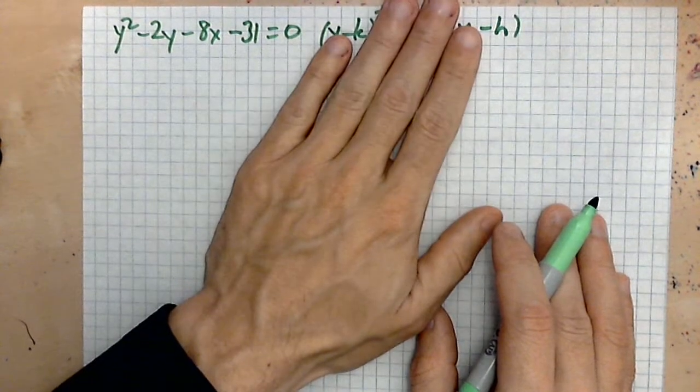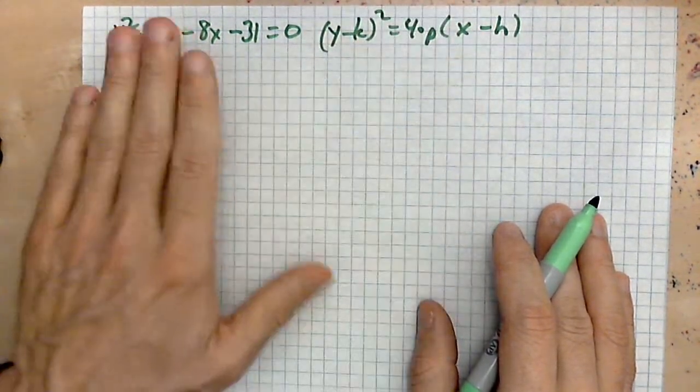That's why the objective is to begin with this and transform into this form, because this form reveals key pieces of information that this one doesn't.